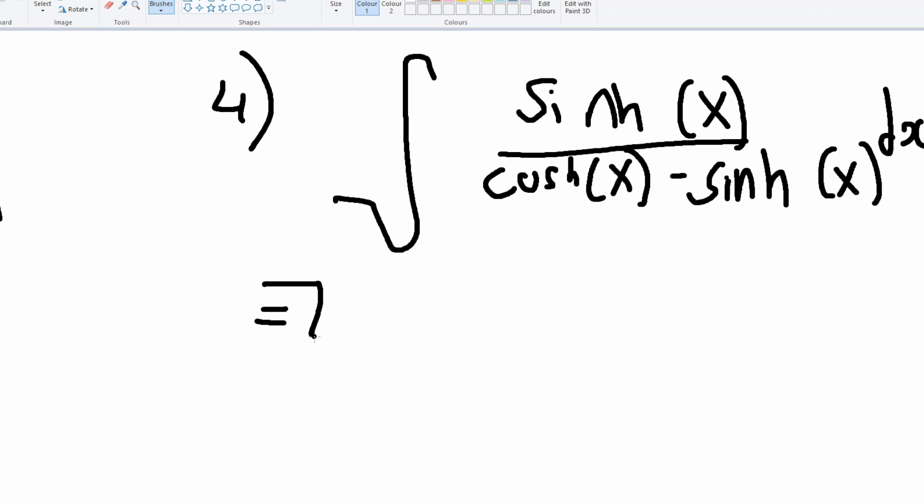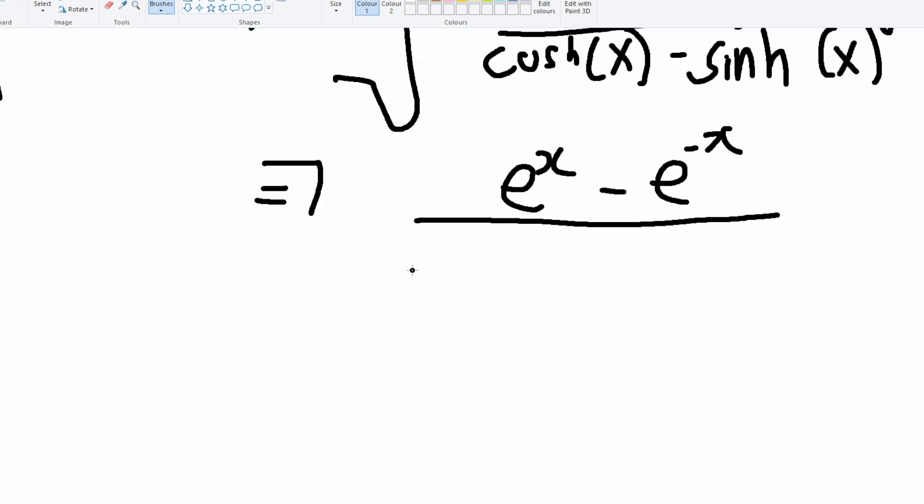Which is just going to be e to the x minus e to the negative x divided by e to the x plus e to the negative x divided by 2, minus e to the x minus e to the negative x divided by 2.